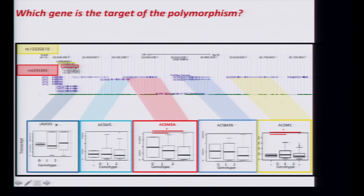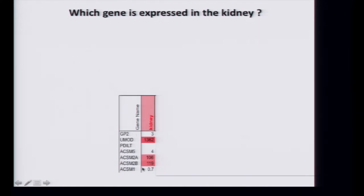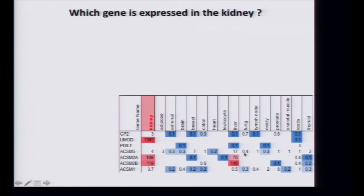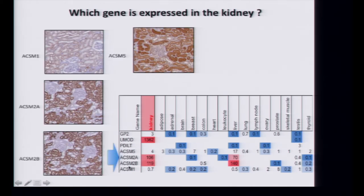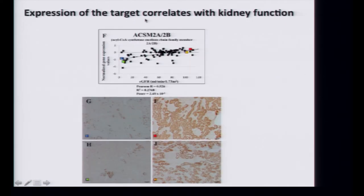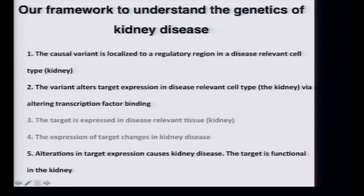We included two additional criteria: the target should be expressed in the disease-relevant tissue, and target expression should change in disease states. Using Illumina BodyMap RNA-seq data, you can see the ACSM target is fairly nicely expressed in the kidney — some expression in the liver, but highly expressed in kidney. Protein expression is also nicely expressed in the kidney. Because we have 1,000 samples, we can look at correlation of gene expression with kidney function — going from GFR of 100 to 0, there is a quite nice R-squared correlation. And protein expression also correlates with disease development.